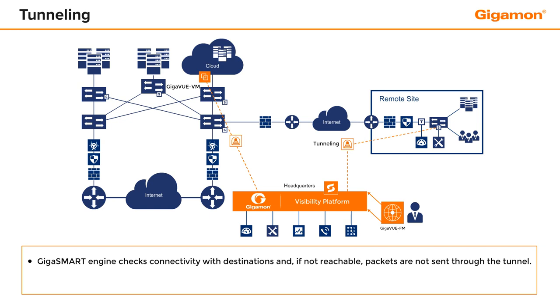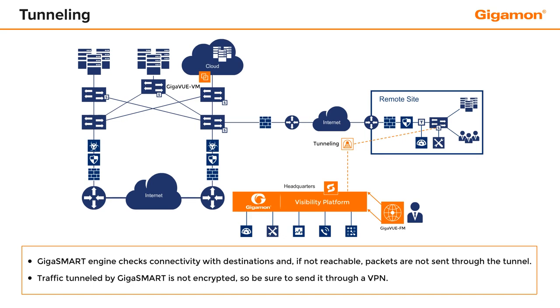The GigaSmart engine performs regular health checks for tunnel destinations to verify connectivity and measure the round-trip time. Traffic tunneled by GigaSmart is not encrypted, so be sure to send it through a VPN.